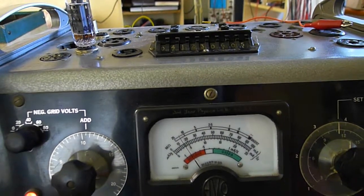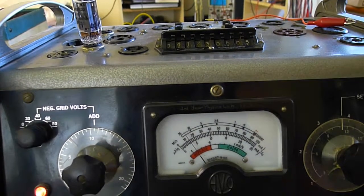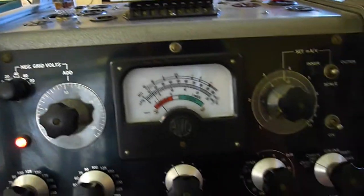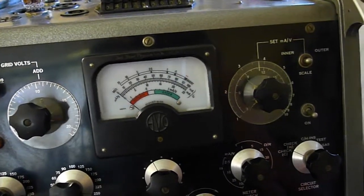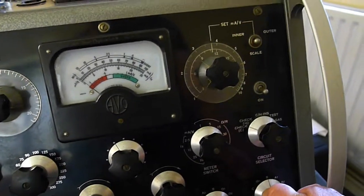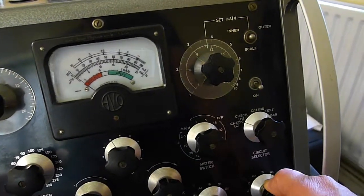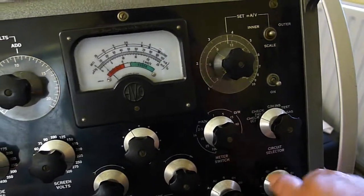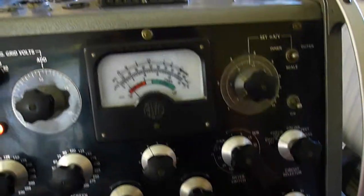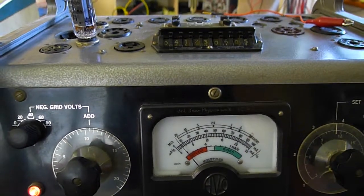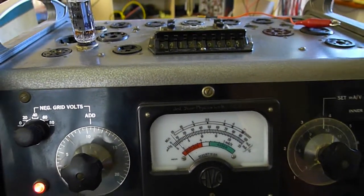And then you can continue rotating for checking for leakage on any of the internal connections. This should show high megohms, which it does. I did actually have the valve on earlier. That's why there's a bit of cathode emission, but that's fine.